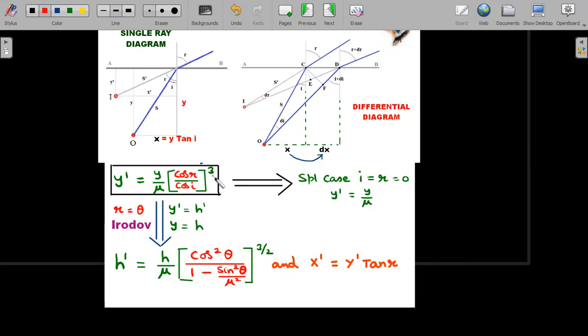Where y is the original depth of the object divided by mu times cos r by cos i whole cube. In Irodov, only the value of r was mentioned. If you replace y and y-primes with h and h-prime, you end up getting this complicated function.